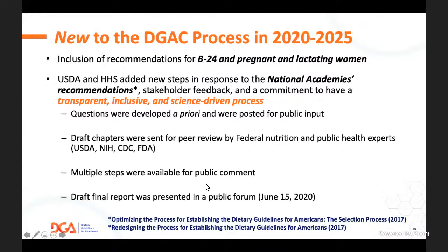Based on those recommendations, a number of items were added, with the overall goal of making the process transparent, inclusive, and science-driven. The biggest change was that questions were developed a priori and posted publicly. In the past, the committee was named and then decided what the questions would be. This time, about one to two years prior to the committee being named, government nutritionists and health professionals developed the questions, which were vetted by the public before finalization. We also involved many new steps of peer review. As chapters went into the DGAC report, all were sent out for peer review. There were multiple steps for public comments, and the final draft report was presented in a public forum, which had not been done in previous years.